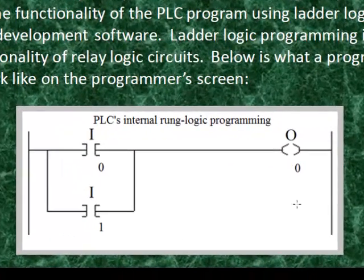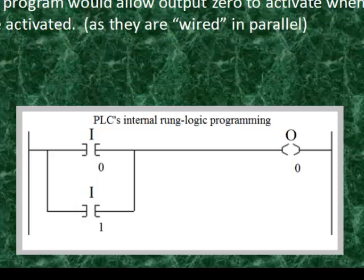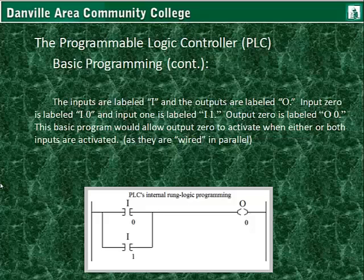This is what the programmer would see — what looks like an ordinary circuit, where this is like a contact, this is like another contact, and this would be the output. The inputs are labeled I and the outputs are labeled O. Input 0 is labeled I0 and input 1 is labeled I1. Output 0 is labeled O0.